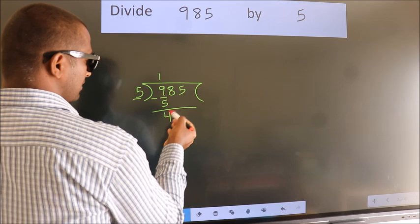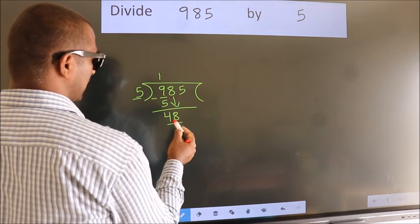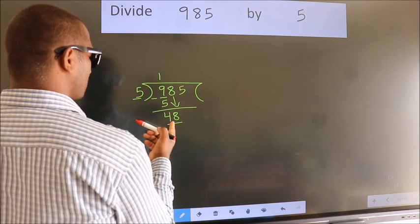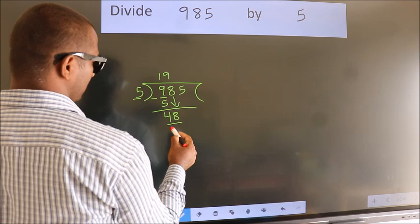After this, bring down the beside number. So, 8 down. So, 48. A number close to 48 in 5 table is 5 nines 45.